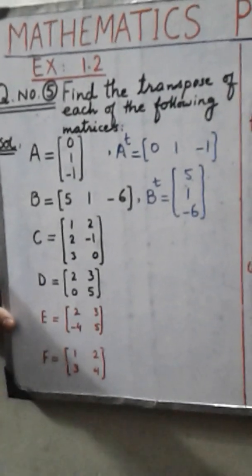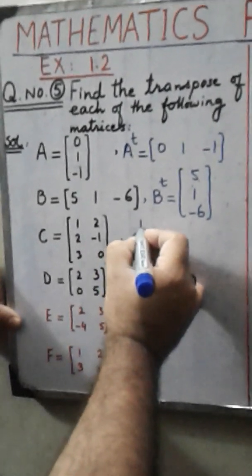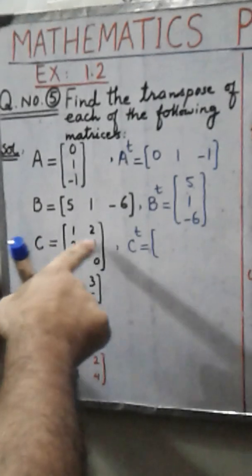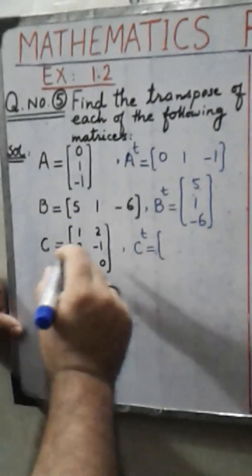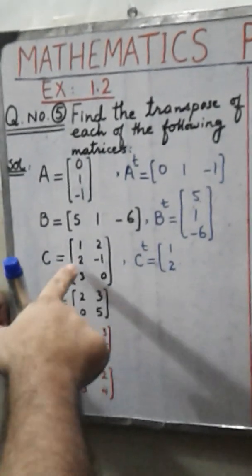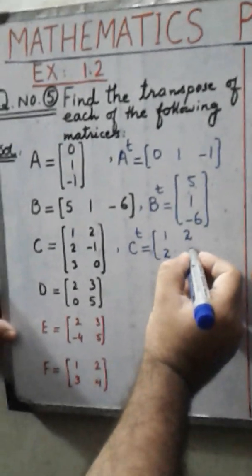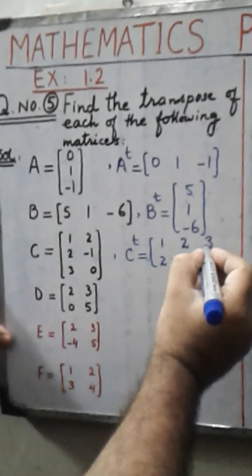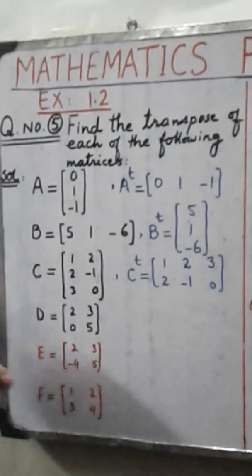Next is matrix C. We have to find the transpose of matrix C. Here you can see there are 3 rows, so we interchange these 3 rows into columns. The first row 1, 2 is written as a column; the second row 2, minus 1 is written as 2, minus 1 in column form; and the third row 3, 0 is written in column form. This is the transpose of matrix C.